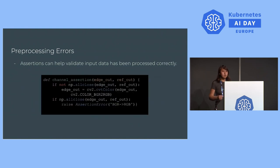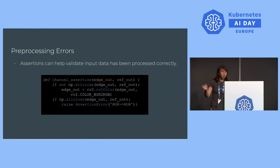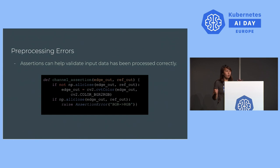How does ML X-Ray help with preprocessing errors? It runs assertions to make sure they pass. In this Python API example, it checks that the input is in RGB format. So if it's accidentally coming in as BGR format, it will let you know — your deployment pipeline is broken and you need to add a preprocessing step to convert to RGB. The code takes the input from your development pipeline called 'edge out' and the reference pipeline input, checks if they look the same, and if not, tries to convert to RGB. If it then matches, it raises an assertion for a channel mismatch.